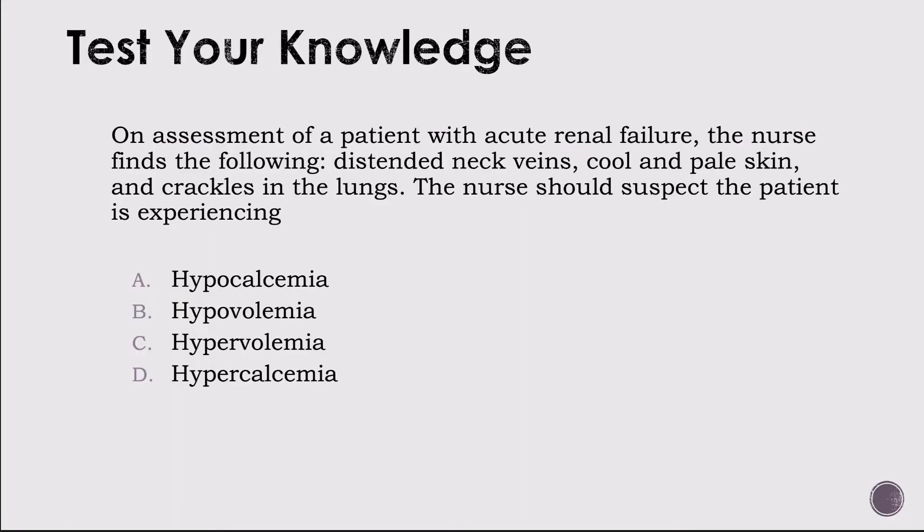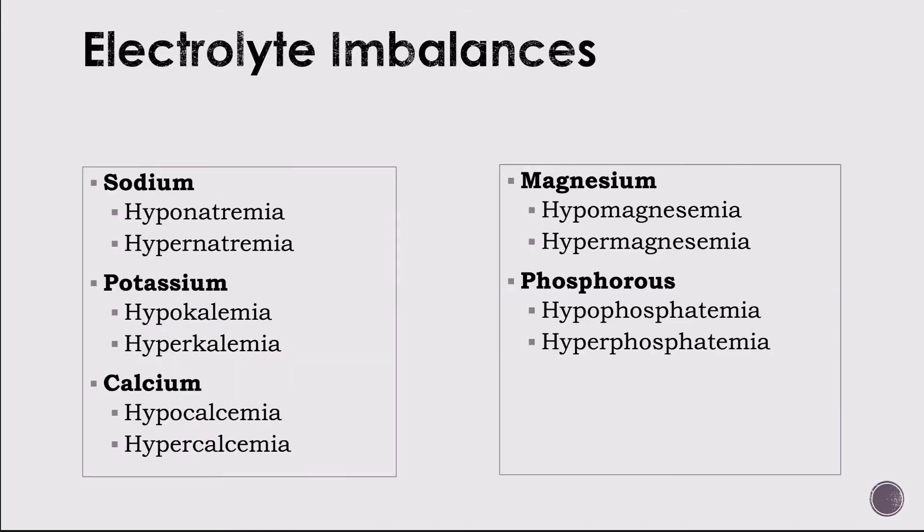Test your knowledge: on assessment of a patient with acute renal failure, the nurse finds distended neck veins, cool and pale skin, and crackles in the lungs. The nurse should suspect hypervolemia. When talking about electrolyte imbalances, refer to table 39-5 on pages 1471 to 1472 — you need to know the signs and symptoms of these imbalances.